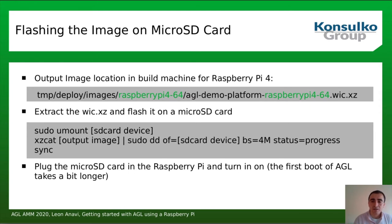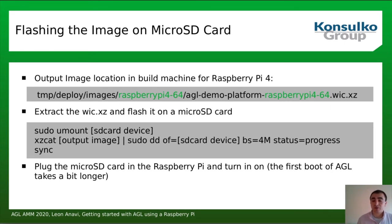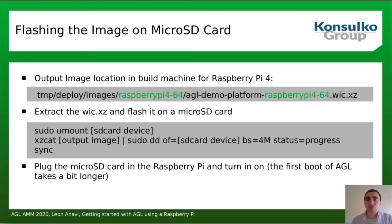Once you have built an image, you need to flash it onto a micro SD card. The image built for Raspberry Pi 4 is 64-bit and can be flashed using 'dd' from the command line, or if you prefer a GUI, an application such as Balena Etcher. Once flashed, plug the micro SD card into the Raspberry Pi and power on the board. The first boot takes a little longer because AGL performs some application installations on first boot; each subsequent boot is much faster.